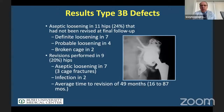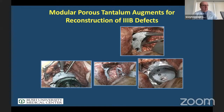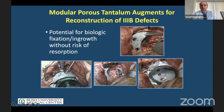Cages broke and loosened. So in a 3B defect, my advice is you cannot use a cage — especially if there's a discontinuity. We evolved from cages into using augments for 3B defects.